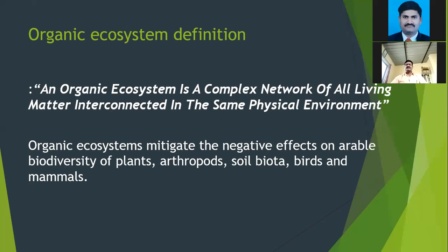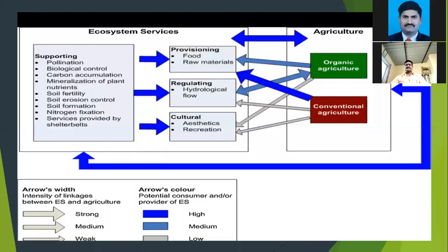These are generally related to organic farming. There are ecosystem services that provide support to agriculture. Organic agriculture, compared to conventional agriculture, supports ecosystem services such as pollination, biological control, carbon accumulation, mineralization of plant nutrients, soil fertility, soil erosion control, soil formation, nitrogen fixation, and services provided by shelter belts.